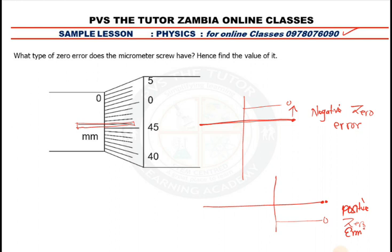So looking at the diagram, this is the line we are talking about. It's in the same line as this line coming from the sleeve, and the zero is above it. So this is a negative zero error.